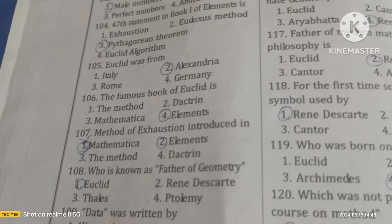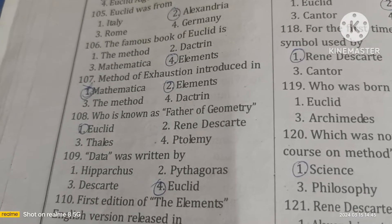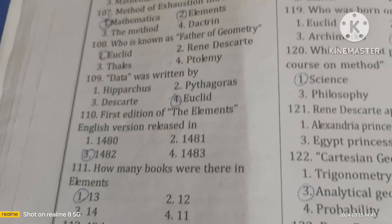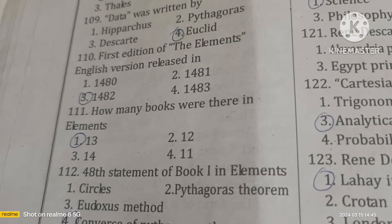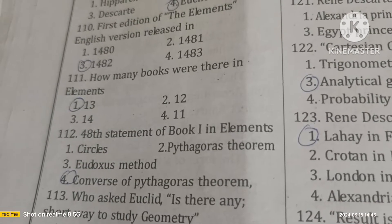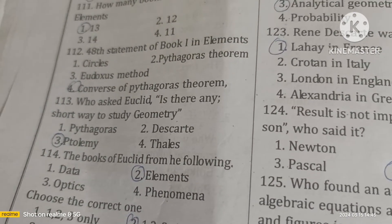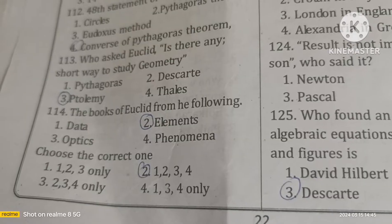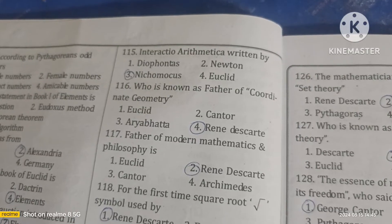Euclid was from Alexandria. His famous book is the Elements, which introduced the method of exhaustion. Euclid is known as the father of geometry. Data was written by Euclid. The first English edition of the Elements was released in 1482. The Elements contains 13 books. The 48th statement of Book 1 in the Elements is the converse of the Pythagorean theorem. Ptolemy asked Euclid if there was any short way to study geometry.